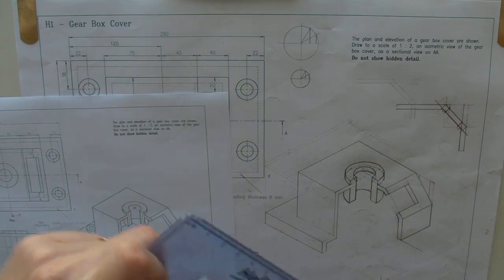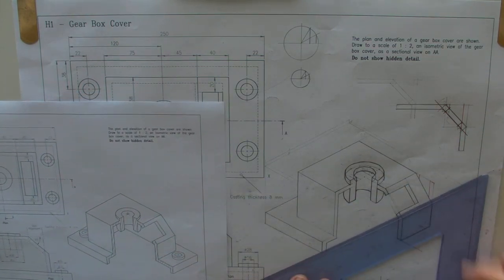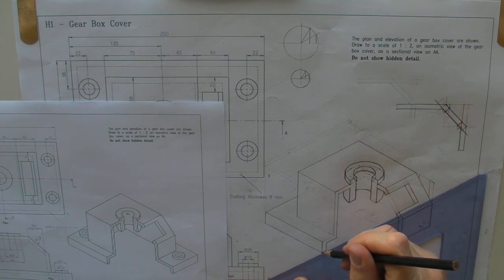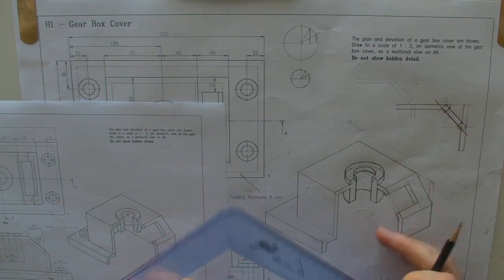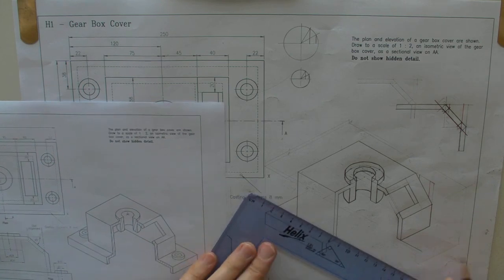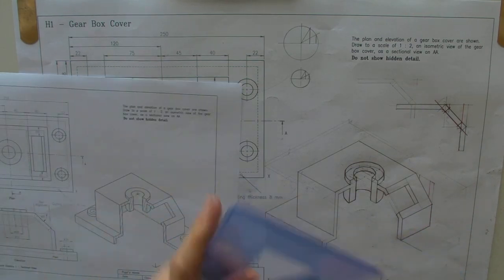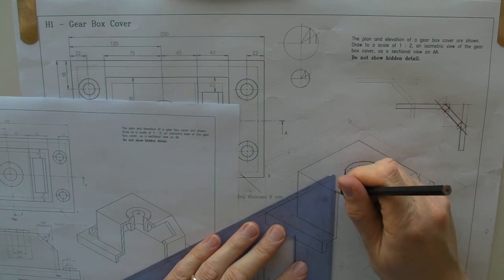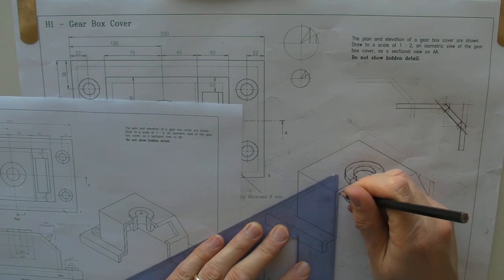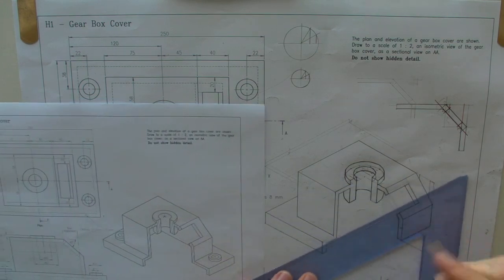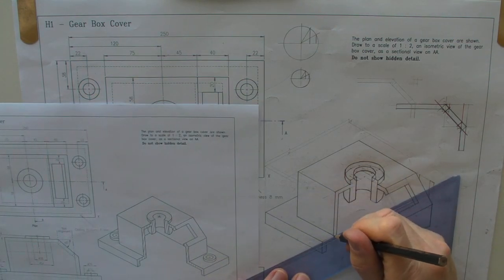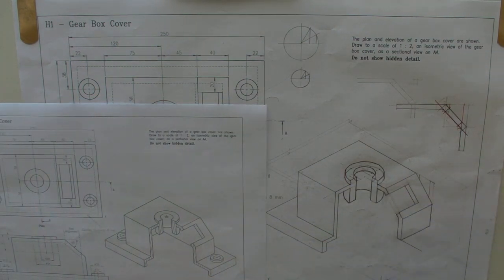Make sure whenever you do these right lines, your final lines, that you're taking care. Make sure that there's no tails and that your lines meet precisely at a point, because you lose marks. This is meant to be a production drawing, a drawing that somebody can use to produce something from.